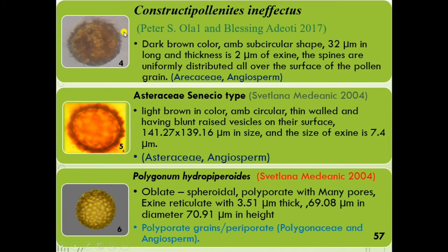This pollen grain belongs to angiosperm, family Araceae — dark brown in color and subcircular in shape. This pollen grain also belongs to angiosperm — light brown in color with a circular thick wall. This pollen grain belongs to the Polygonaceae family and is polyporate — it has many pores, which is why it is called polyporate.